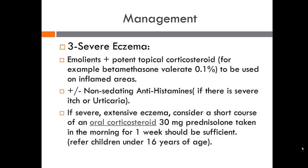For severe eczema, use emollients plus potent topical corticosteroids, for example betamethasone valerate 0.1%, on inflamed areas, with or without non-sedating antihistamines if there is severe itchiness or urticaria. If there is severe extensive eczema, consider a short course of oral corticosteroid — 30 mg prednisolone taken in the morning for one week should be sufficient. Please refer children under 16 years of age if they have eczema.